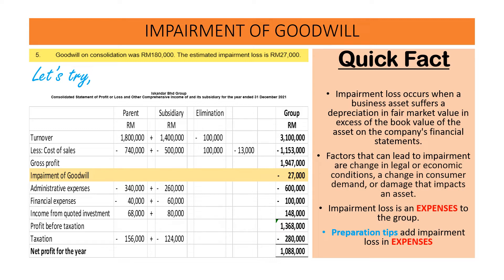Impairment loss is an expense to the group. So in terms of the preparation of the Consolidated Statement of Profit and Loss and Other Comprehensive Income, the impairment loss is treated as an expense.